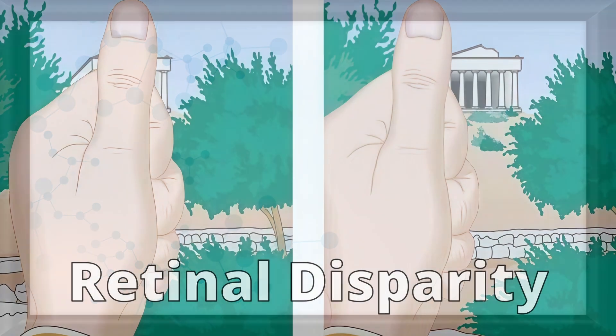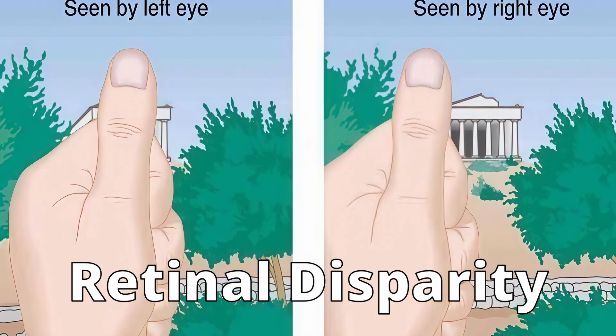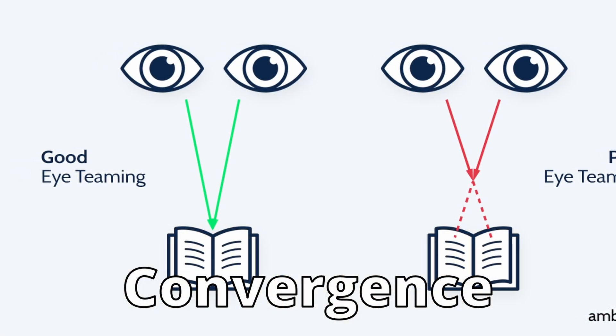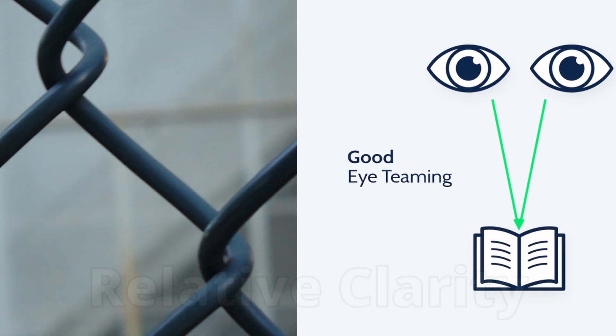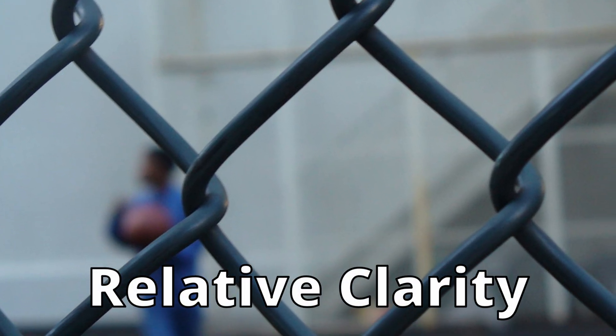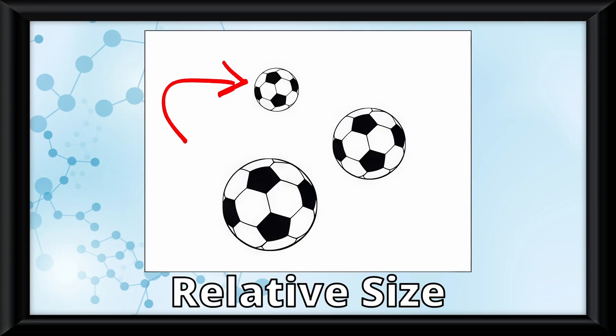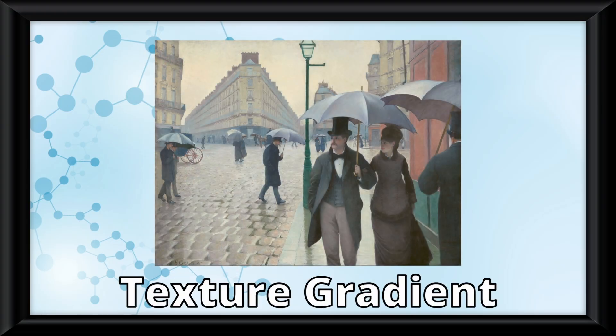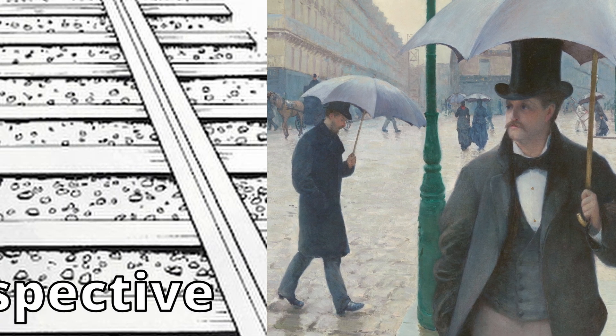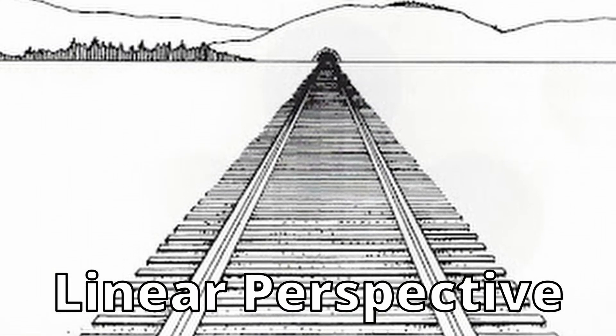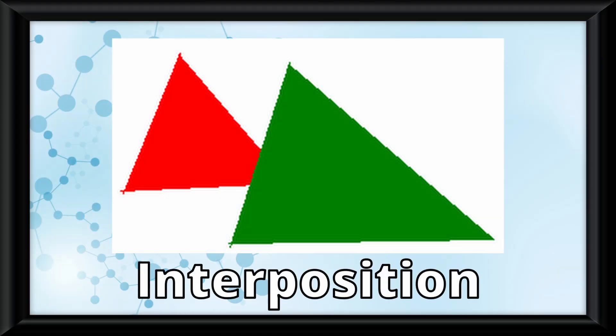Now let's speed run through all the binocular and monocular cues. Retinal disparity is the difference between the images seen by the left and right eyes. Convergence is where your eyes will turn inward, or converge, on one object. Relative clarity is where you perceive things as being farther away if they are hazy or blurry. Relative size is where you perceive smaller objects as being farther away. Texture gradient is when something appears more detailed when it is closer. Linear perspective is when parallel lines look like they converge, but in reality they are simply just farther away. And finally, interposition is where an object blocking another object appears closer.